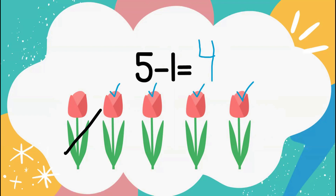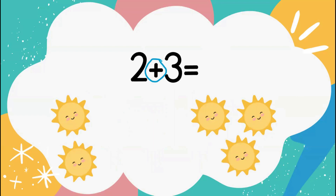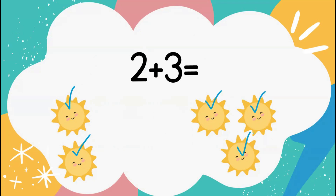Let's take a look at another problem. This problem is an addition problem, so we're adding this time. Be sure when doing math problems to double check what the symbol in the middle is. We're going to make our group bigger. Here represented by suns — we have 2 suns plus 3 suns and we want to combine them. Let's count all: 1, 2, 3, 4, 5. We have a total of 5 suns. 2 plus 3 equals 5.